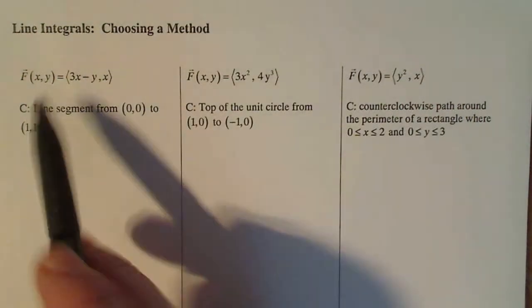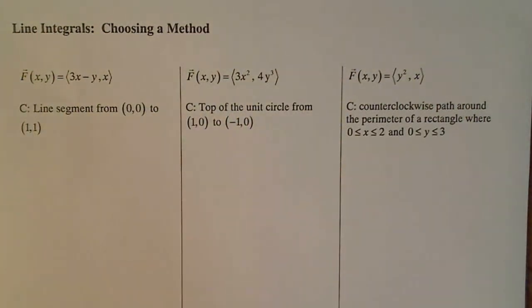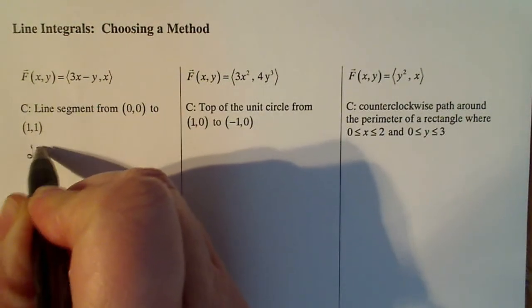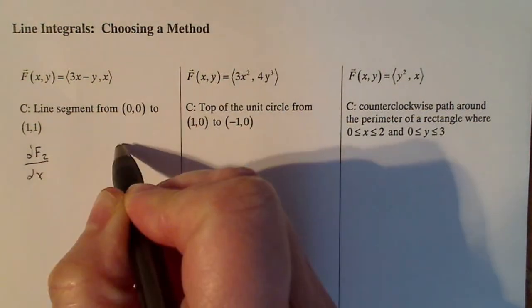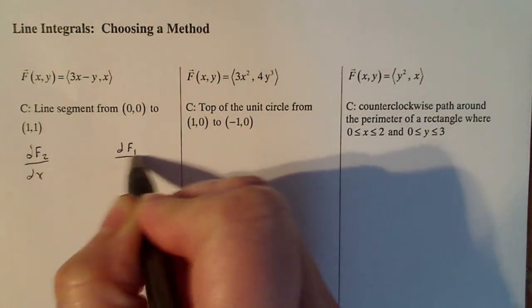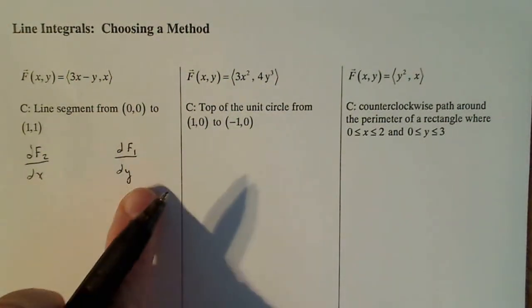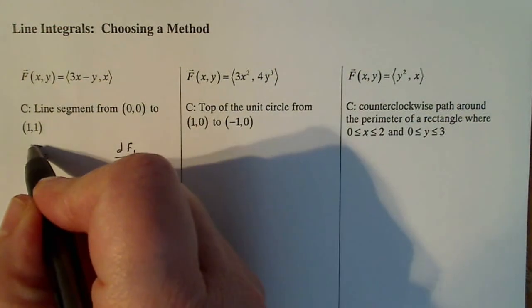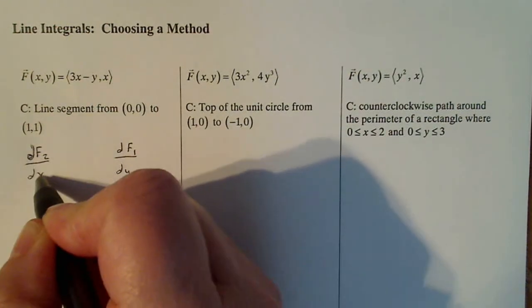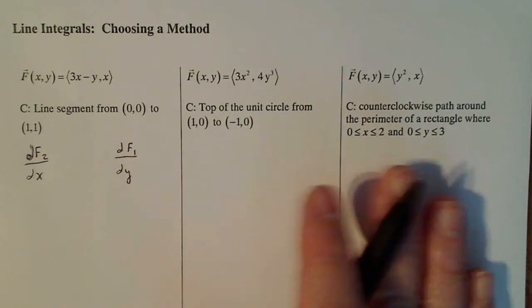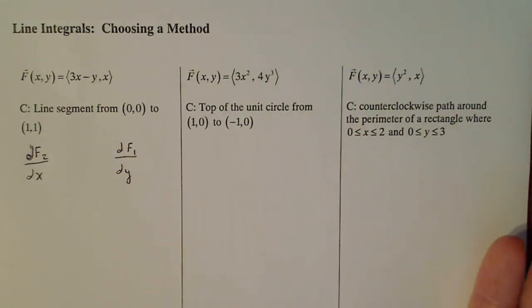I want to take a look at each of these line integrals and look at the relationship between the partial of f2 with respect to x versus the partial of f1 with respect to y. Now, if those two items are equal, if these two functions are equal, that means that the vector field is path independent. And if we can determine which one of these is path independent, then we can use the fundamental theorem of line integrals on that.